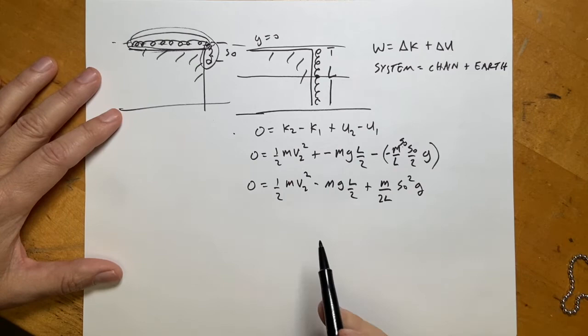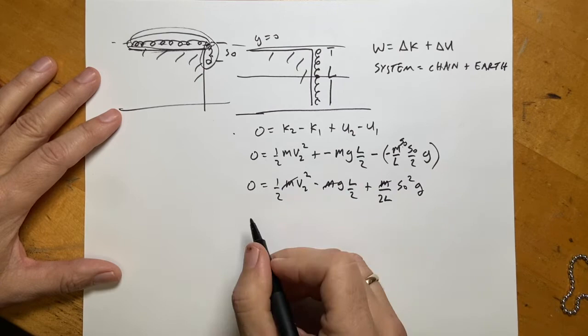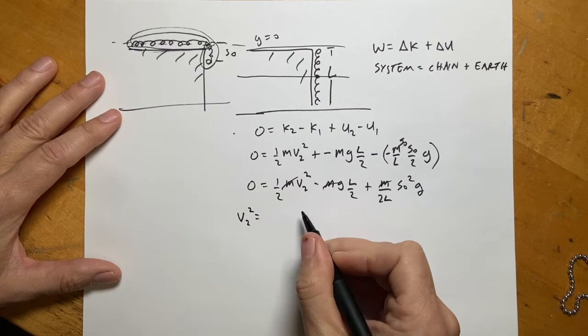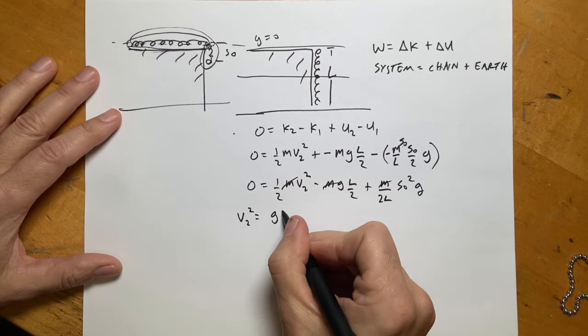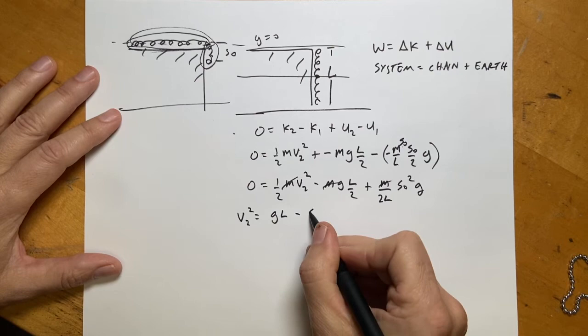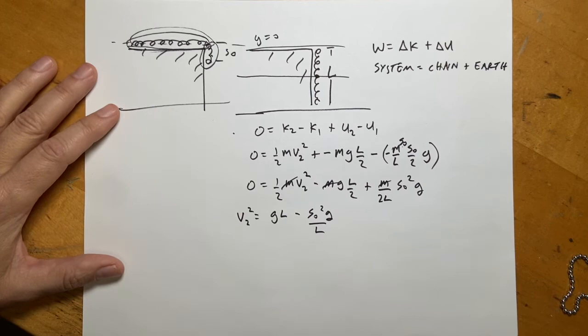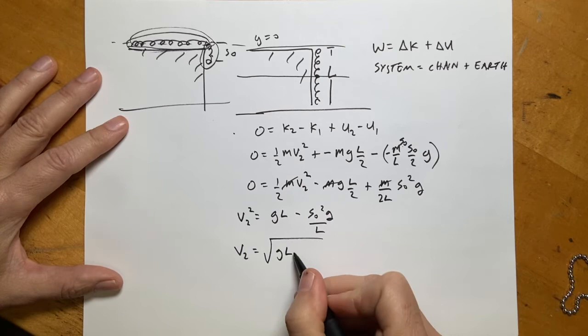Solving for v₂: dividing by m and rearranging gives v₂² = g·L − g·s₀²/L. Therefore v₂ = √(g·L − g·s₀²/L). That's the final speed we can use as a check.